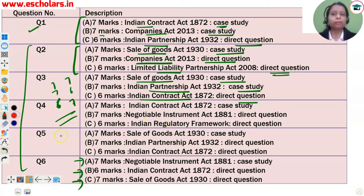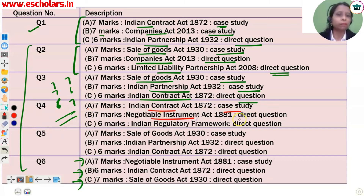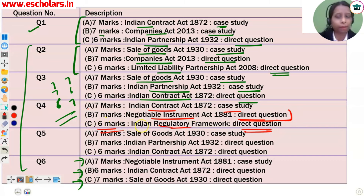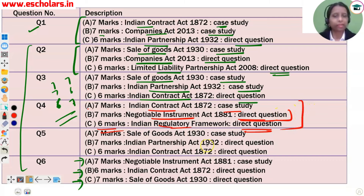Question number 4: Part A comes from the Indian Contract Act — case study-based. Part B comes from the Negotiable Instruments Act — direct question. Part C (6 marks) comes from the Indian Regulatory Framework — direct question. So you now know exactly which chapter each part of each question comes from.